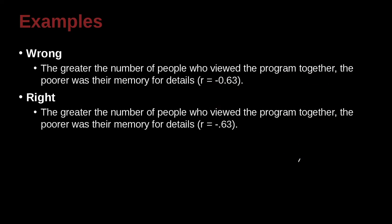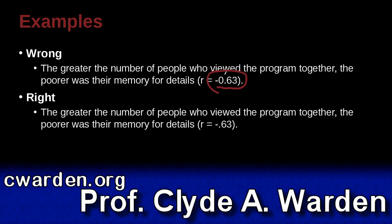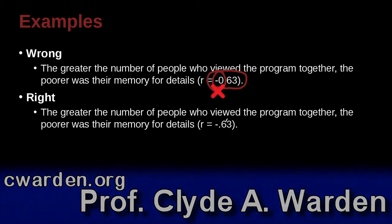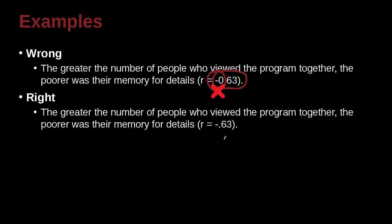The greater the number of people who viewed the program together, the poorer was their memory for details, r equals 0.63. The question here is, do we keep this 0 here? And the answer is no. No 0. Why? Because this cannot be bigger than 1. Its range is 0 to 1. And if 0 to 1, you do not include the 0 before the decimal point.